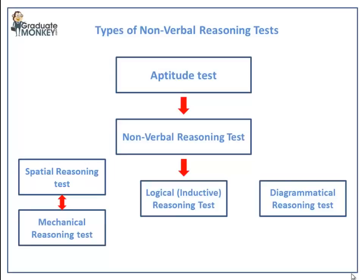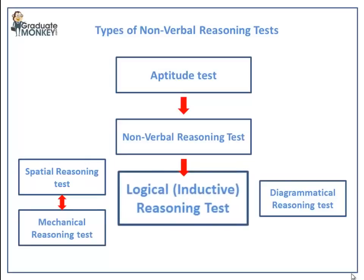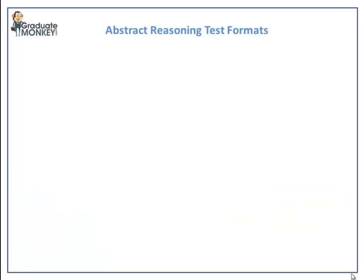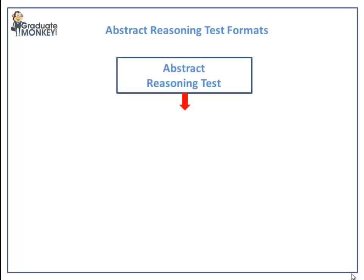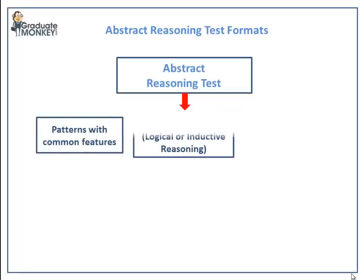Also known as Abstract Reasoning Tests, Logical Reasoning Tests are used to measure your general intellectual reasoning ability using first principles. There are three types of Abstract Reasoning Tests: patterns where you have to identify common features; series of patterns — diagrams that develop under a certain logical sequence; and finally matrices consisting of shapes and patterns.